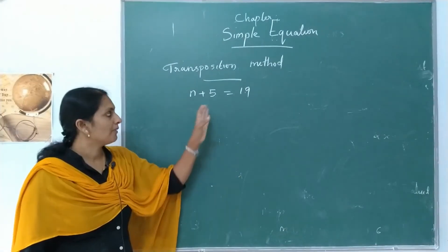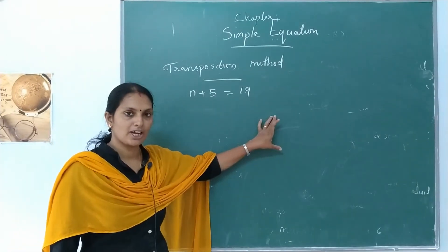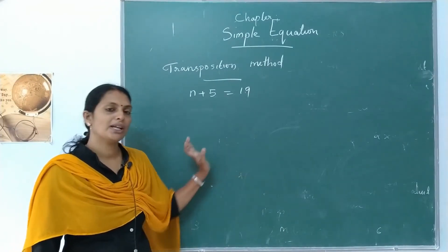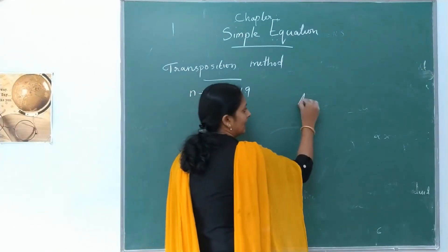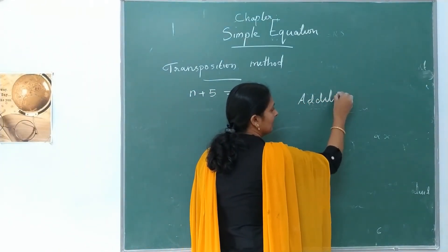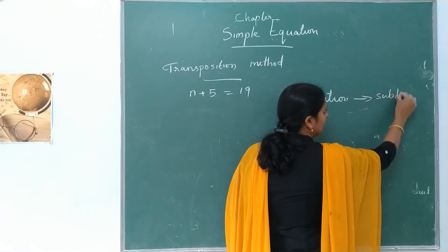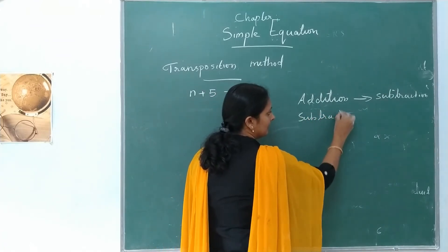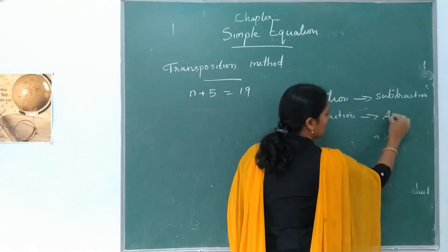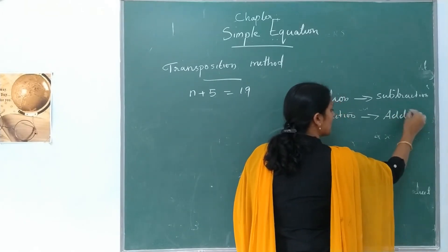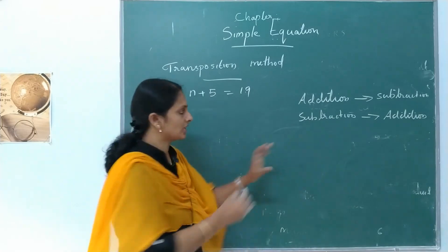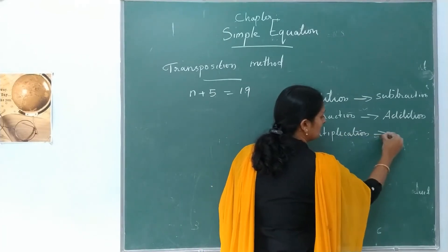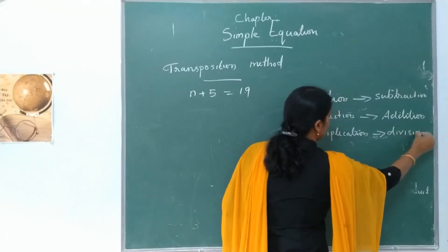In the transposition method, the condition used is: addition and subtraction are interchanged when transposed — that is, a positive sign becomes negative and a negative sign becomes positive. Similarly, multiplication and division are interchanged when transposed.